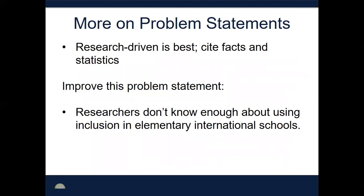Improving that statement: first, we'd want to know what's going on in elementary international schools and why that's an important site to study. Second, we need to understand inclusion better — what percentage of the population are special education students? If a school of 2,000 students has only one special education student, that may not warrant a study. But if 10% of students have special education needs, or if those numbers are rising, that matters. We also know that special education teachers have extremely high rates of turnover and burnout — so maybe that's why we need to study inclusive techniques in schools to prevent teacher burnout. Just because we don't have the research doesn't mean we need it on this topic; we need to prove there's actually a problem.